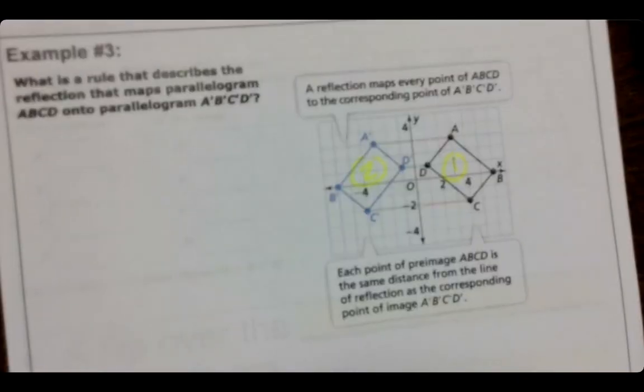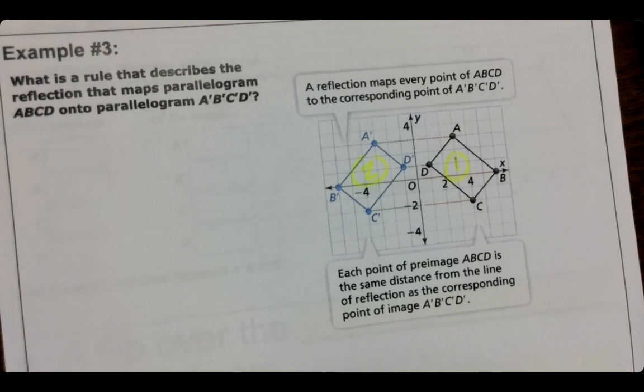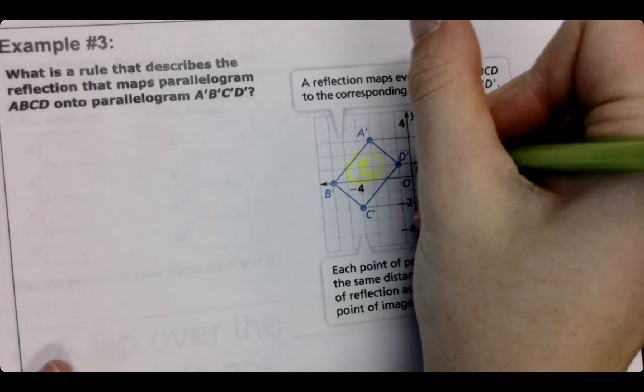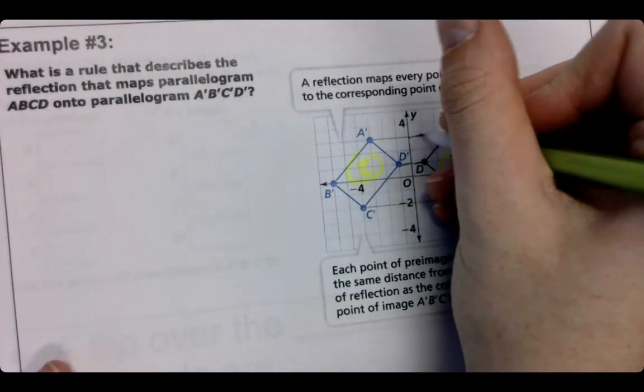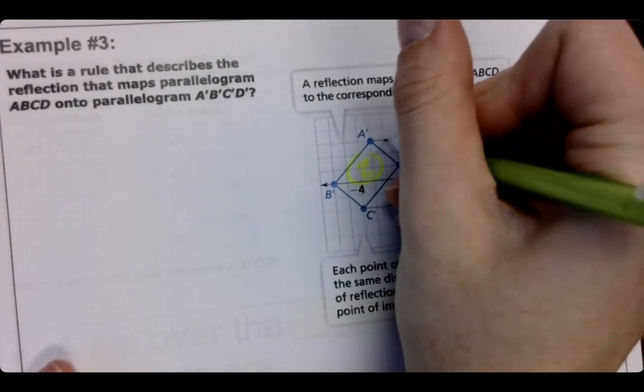Then from there, each point of the preimage is the same distance from the line. So notice how D was one away, is one away on both sides. A is one, two, three boxes away on both sides.